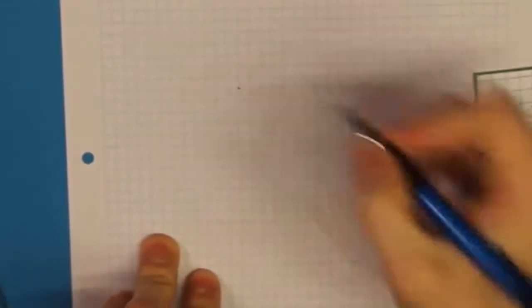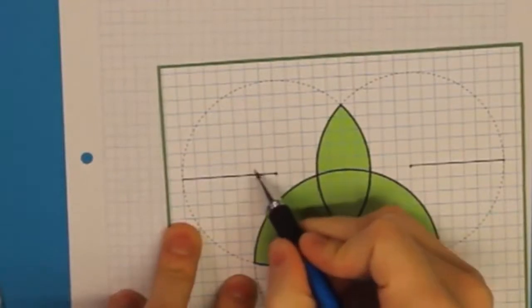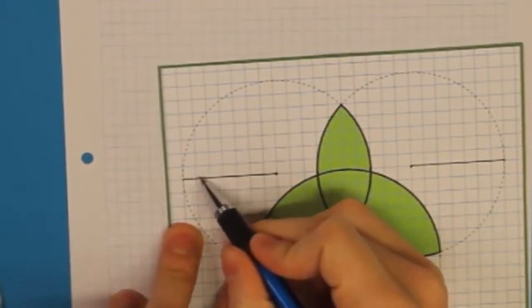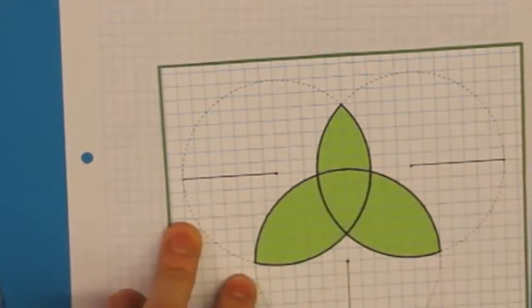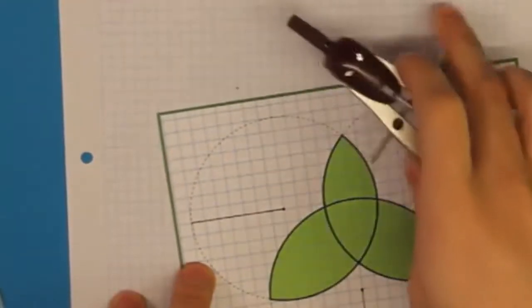Und als nächstes müssen wir wissen, wie groß der Radius ist, damit wir den Kreis konstruieren können. Also zählen wir einfach mal in der Vorlage die Kästchen ab, beginnend beim Mittelpunkt. Das sind dann also eins, zwei, drei, vier, fünf, sechs, sieben Kästchen. Das heißt, auf unserer Zeichnung müssen wir jetzt einen Radius von sieben Kästchen in den Zirkel nehmen.